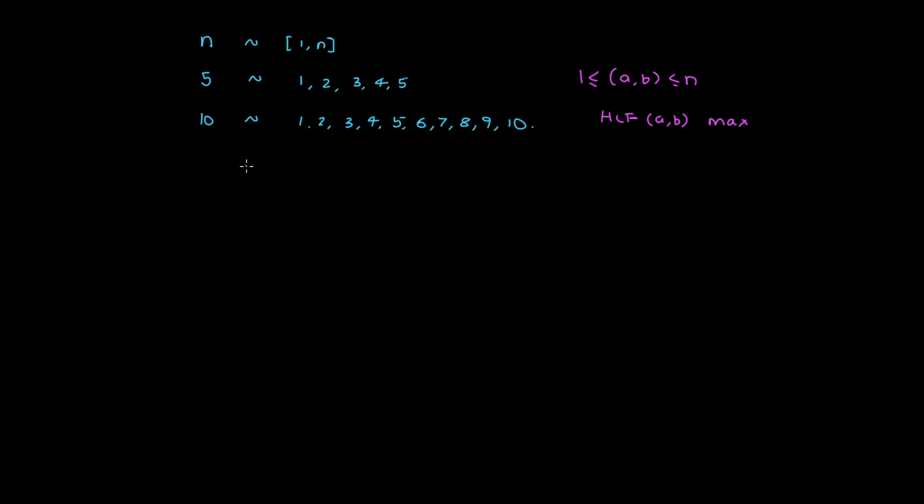So before we actually materialize our solution, let's actually know what GCD or HCF means. From the name HCF, it means highest common factor. So if there are two numbers a and b, in this case we have to jot down all the factors of a and b, and then find the common factors of a and b, pull them up, and then we have to find the highest or the largest number of all those common factors. That largest number corresponds to the greatest common divisor or highest common factor of those two numbers a and b.